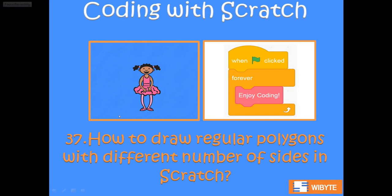Hello everybody, welcome back. We are in lesson number 37. In lesson 36 we saw how we can draw a square using a move and the turn block. In this video we will extend that idea and we will see how we can draw regular polygons with different number of sides.